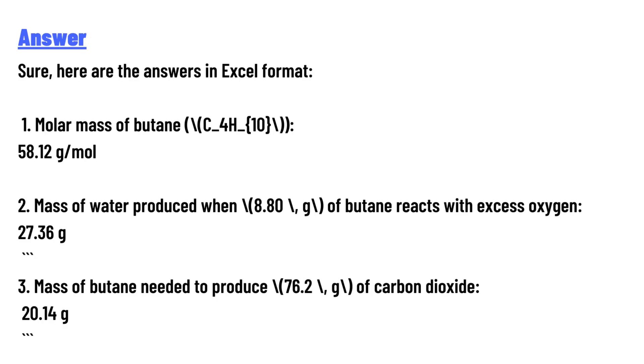Sure, here are the answers in Excel format. One: Molar mass of butane C4H10 is 58.12 grams per mole.